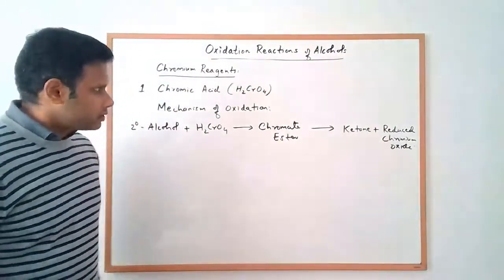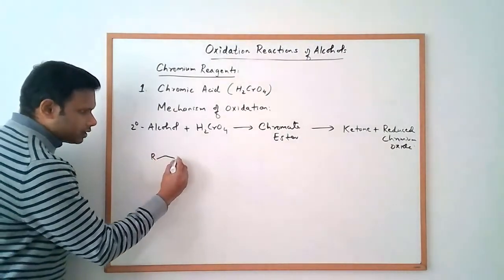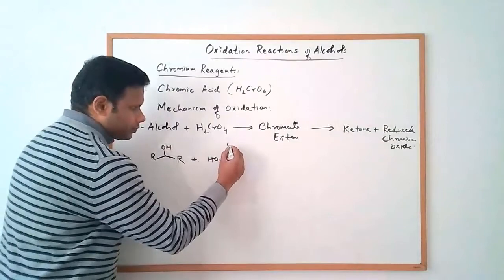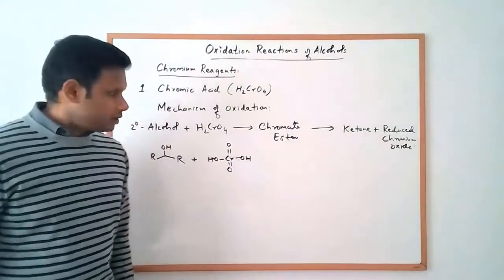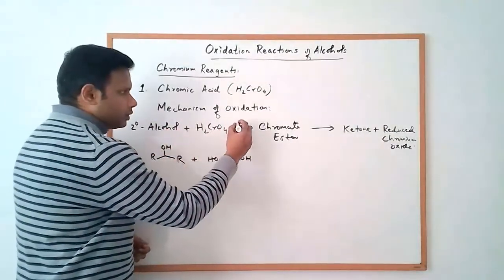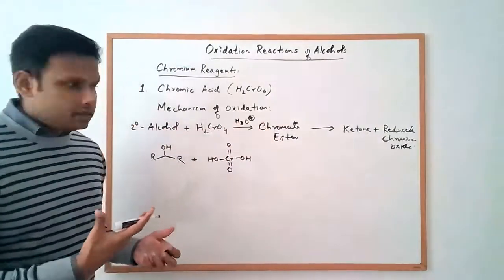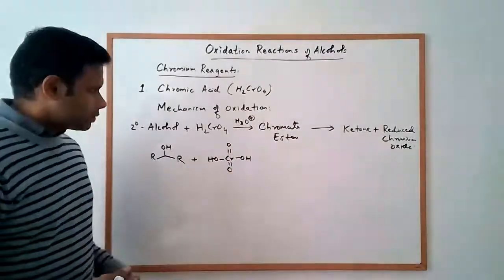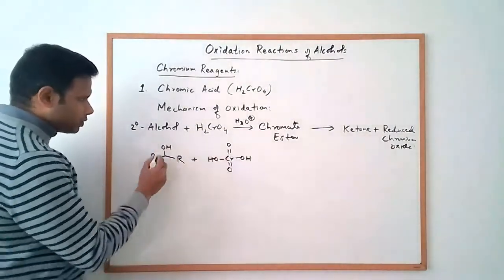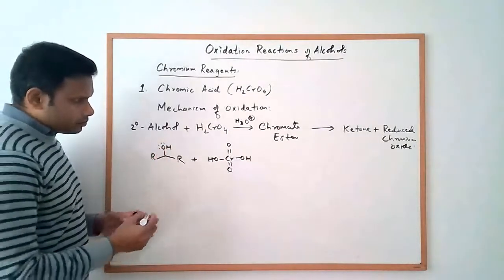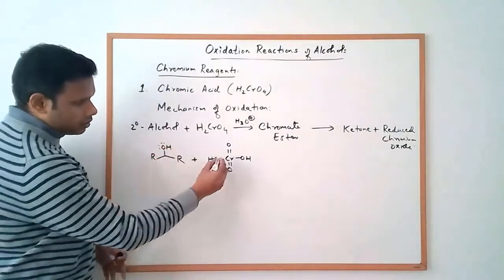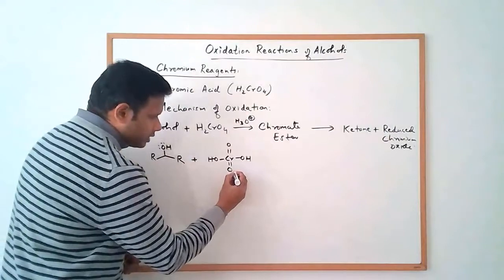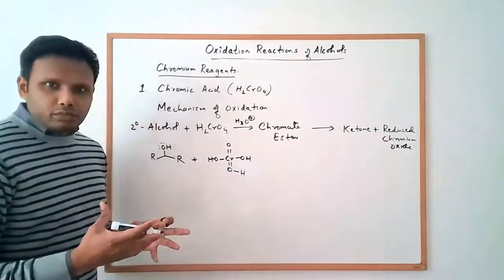If we start with a secondary alcohol and chromic acid, remember that all of this is happening under acidic conditions, because we're not starting with chromic acid per se — we're using chromium trioxide or sodium dichromate with some acid. The alcohol reacts with chromium trioxide, and the alcohol can attack the chromium. Under acidic conditions, it is very likely that the chromic acid is in a protonated form.